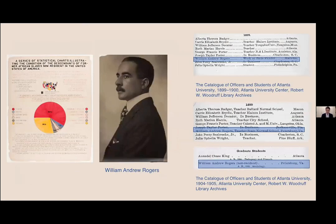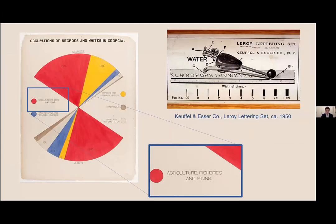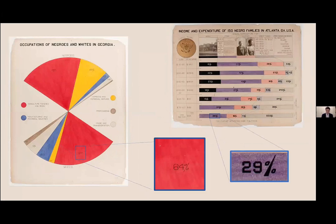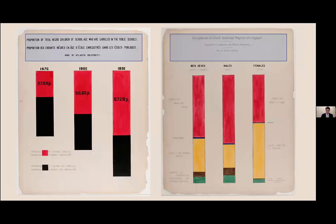Du Bois relied heavily on his students, particularly William Andrew Rogers, a sociology graduate and instructor at what is now Virginia State University. This collective and collaborative, all-hands-on-deck endeavor fundamentally shaped the design of these data visualizations. As Silas Munro has described, the typography used across data visualizations varies. For most of the diagrams, a lettering guide was used to standardize the drawing of typefaces. Because the letters and numbers were limited in the guides, punctuation such as percentage marks differ at times from one diagram to the next. Some use mechanically drawn lettering, while for other visualizations letterpress was used instead — a possible indication of the time pressures the team was under.